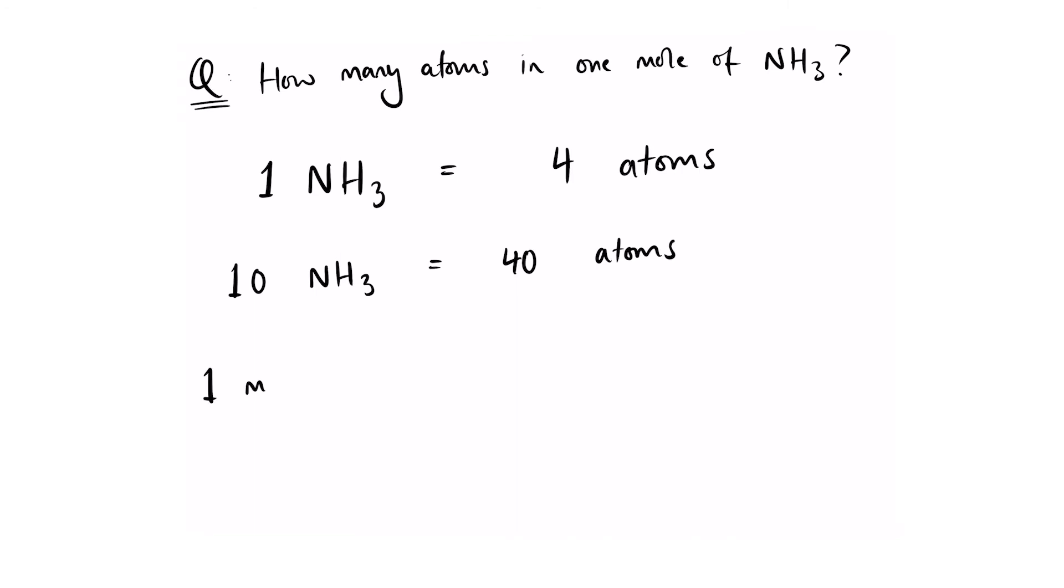Now remember, a mole is just a number. So if I said I have 1 mole of ammonia, that means if I times that by 4, I will have 4 moles of atoms. Finally, we can times this by Avogadro's constant to give us the exact number of atoms.